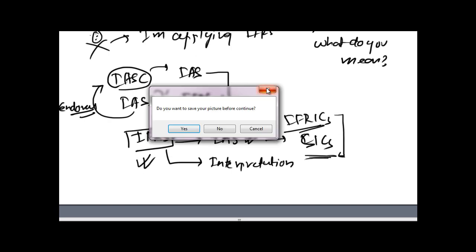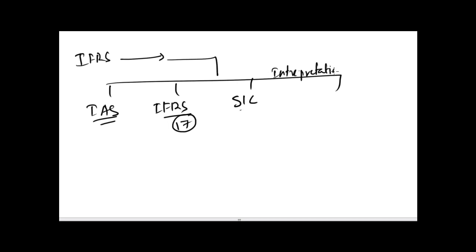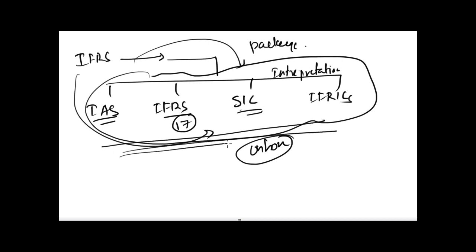These interpretations also form part of IFRS. So if someone says they are applying IFRS, the package involves four items: the IAS endorsed by IASB, the 17 IFRS standards, the SIC interpretations, and the IFRIC interpretations. Many people think IFRS means only the 17 IFRS standards issued by IASB — that is not correct. IFRS means compliance with all of these items.